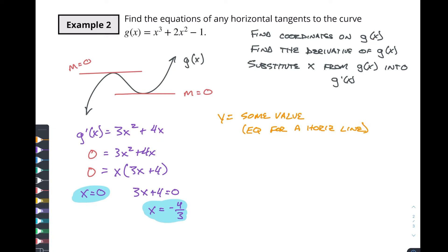So if we take x back into our function, if we have g of zero, g of zero into our function, that will be the easy one to do. So that's going to be zero cubed plus two times zero squared minus one. So zero plus zero minus one. So one of the places, g of zero is going to equal negative one. So one of our equations for this is going to be y equals negative one. There's one of our solutions.